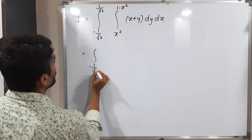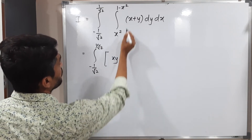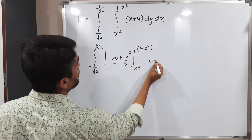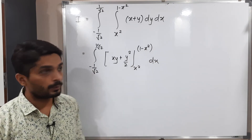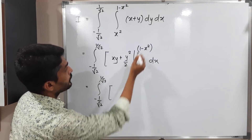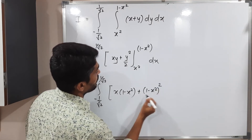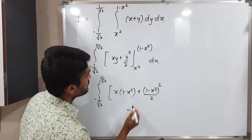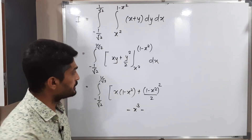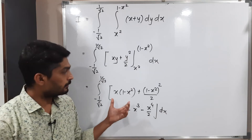The inner integration gives: ∫ from −1/√2 to 1/√2 of [xy + y²/2] evaluated from y = x² to y = 1 − x², dx. Putting the upper limit: x(1 − x²) + (1 − x²)²/2, minus the lower limit: x·x² + (x²)²/2 = x³ + x⁴/2. Note the minus sign outside changes all signs.